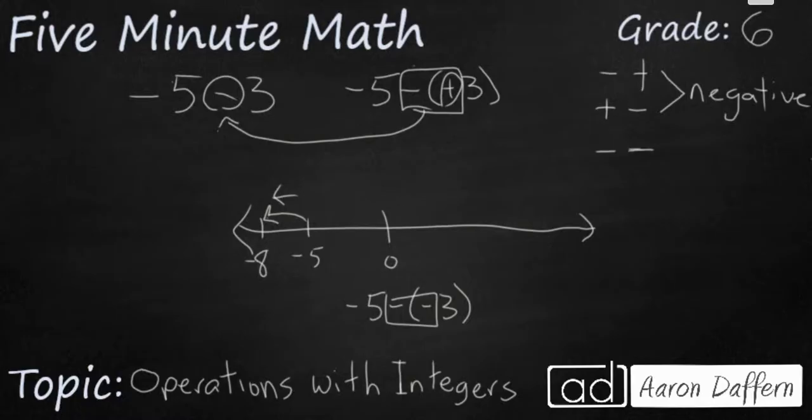If negative 5 minus positive 3 makes me go to the left, negative 5 minus negative 3 is actually going to go in the opposite direction. It's actually going to move to the right, and that's going to get me to negative 2.